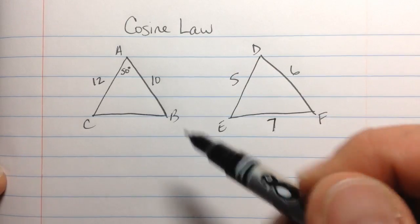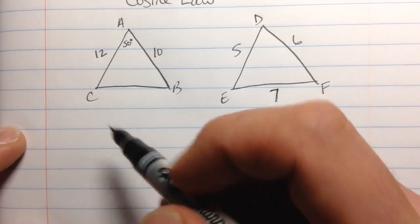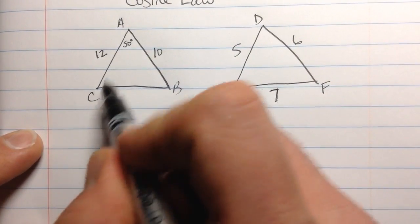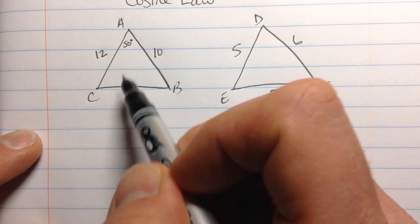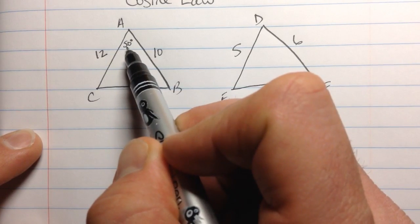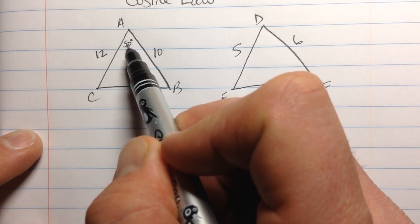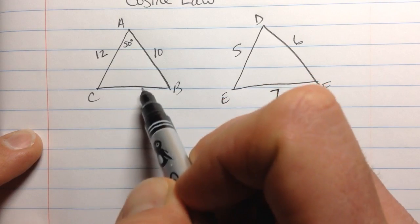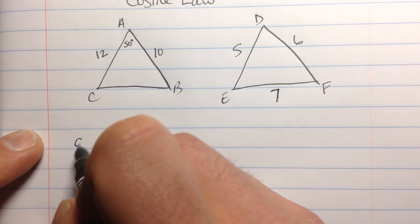So let's take a look at this first one over here, ABC, this triangle ABC. Here's the cosine law. Here's how it works for any triangle. If we have three sides, little a, little b, little c, and here's this opposite angle here, A, opposite from little a.